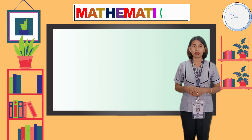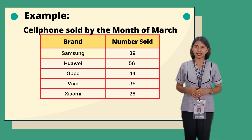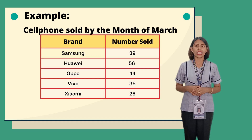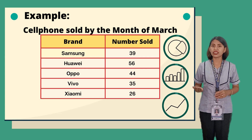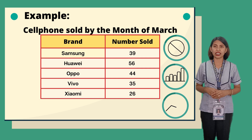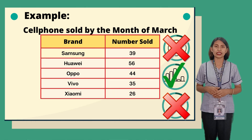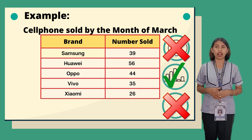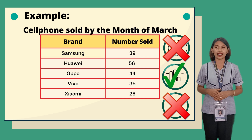Problem number one: the table shows the number of mobile phones sold by brand for this month. What graph would best demonstrate the sales of each brand? The numerical data in this table is not changing over time, so a line graph would not be appropriate. The bar graph stresses the individual sales of each brand as compared to the others and does not require using the total of all items, making it the more direct and accurate way of presenting this data.